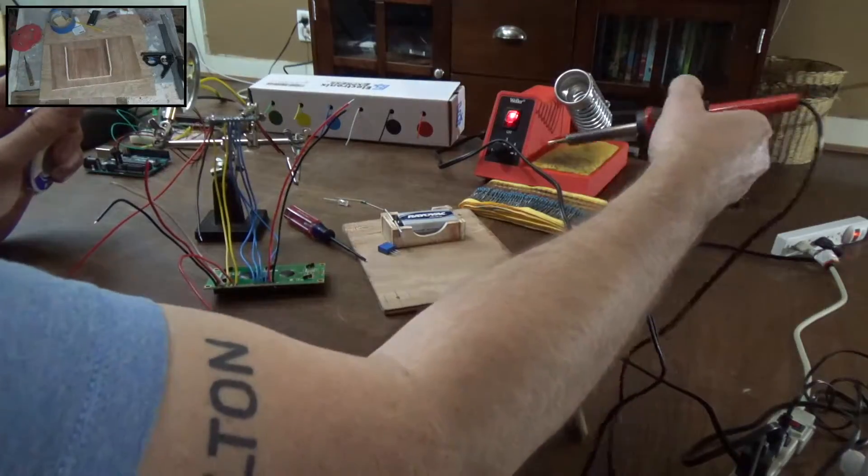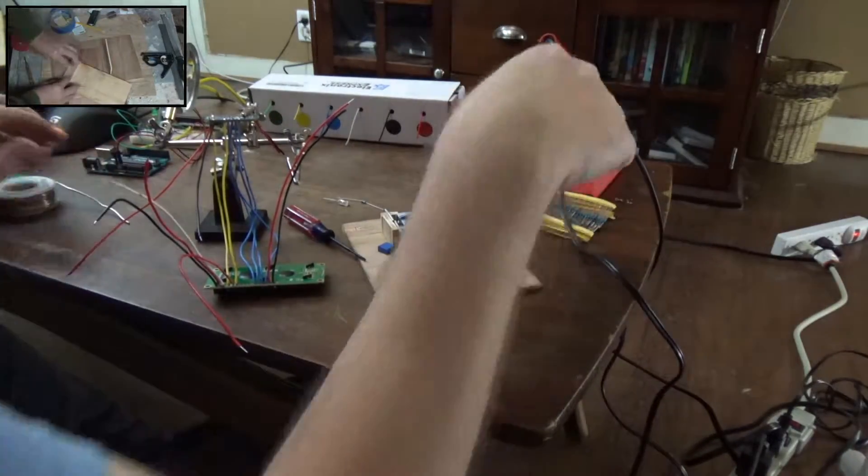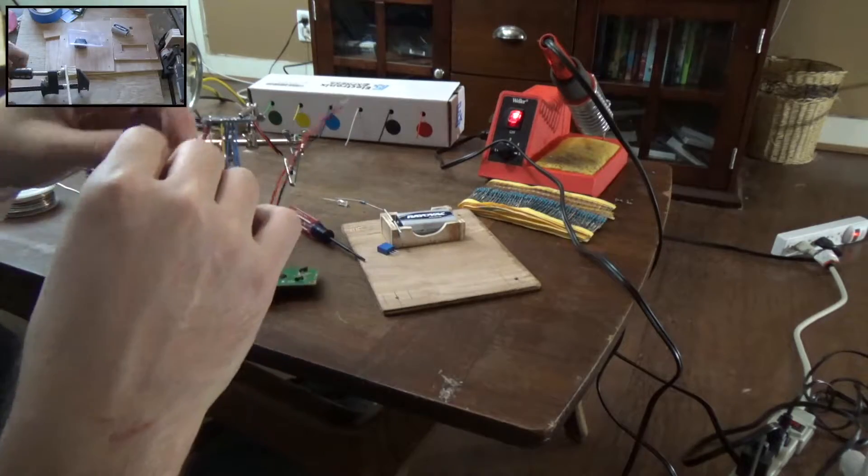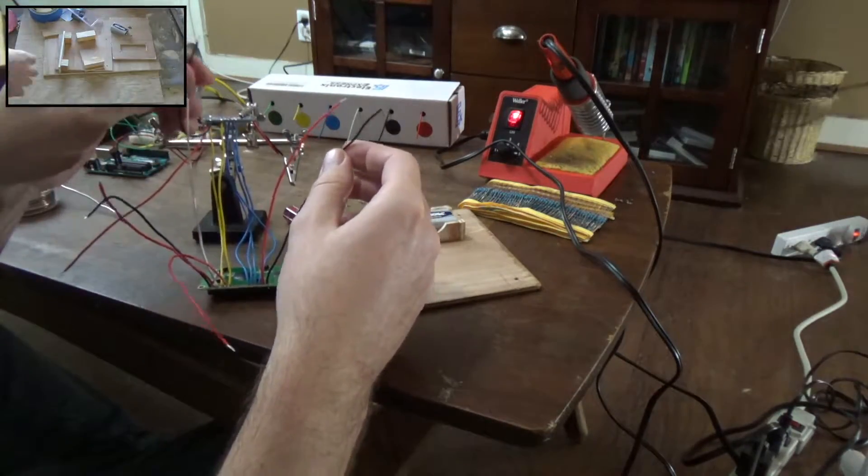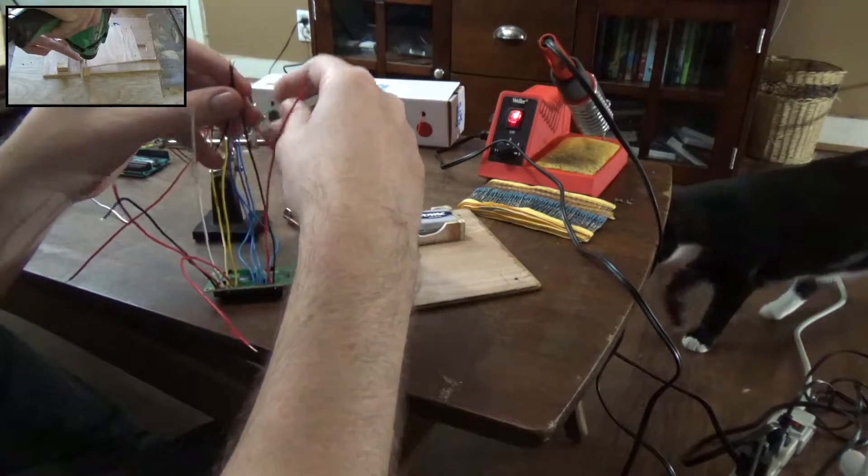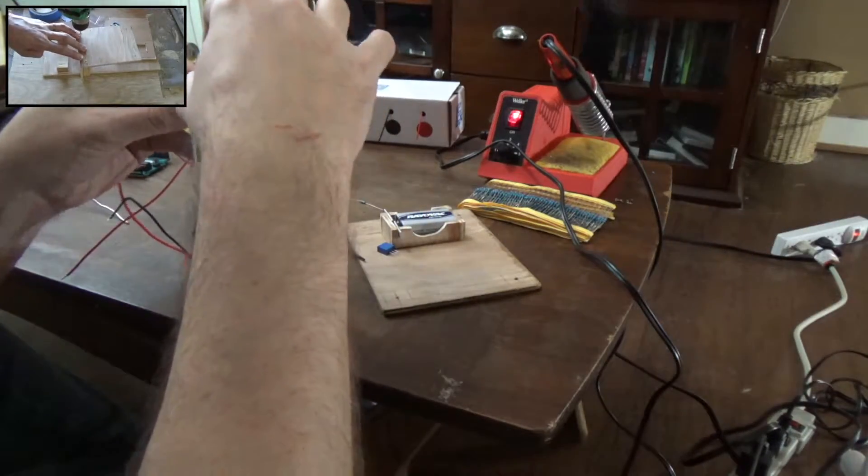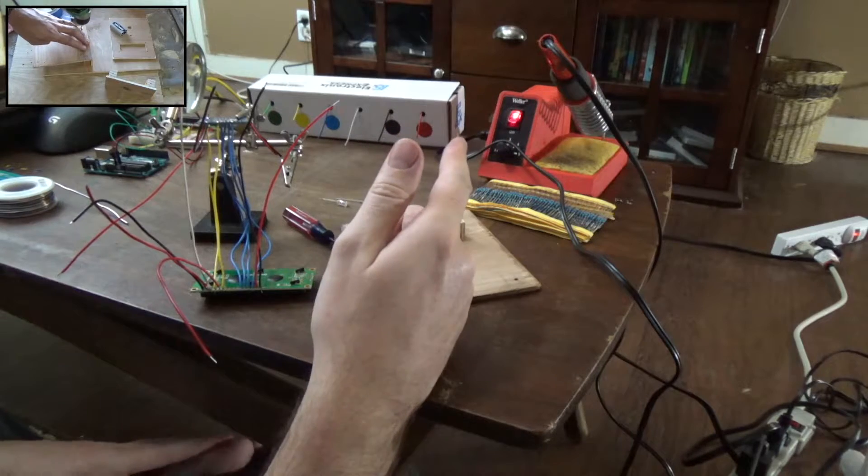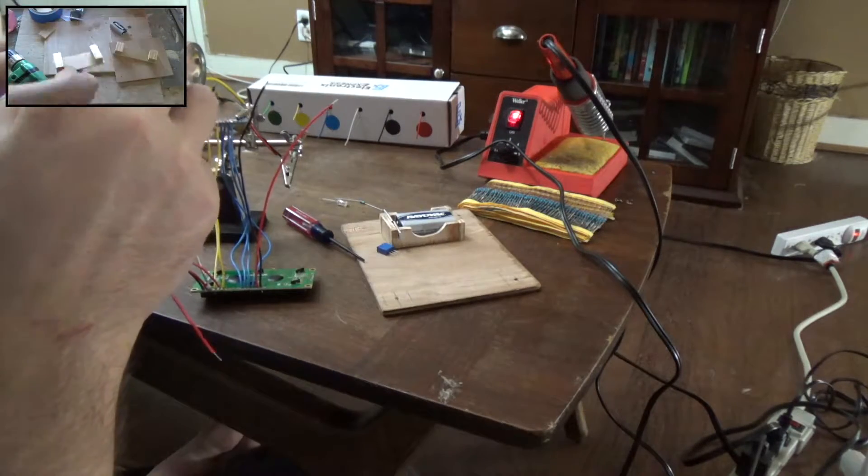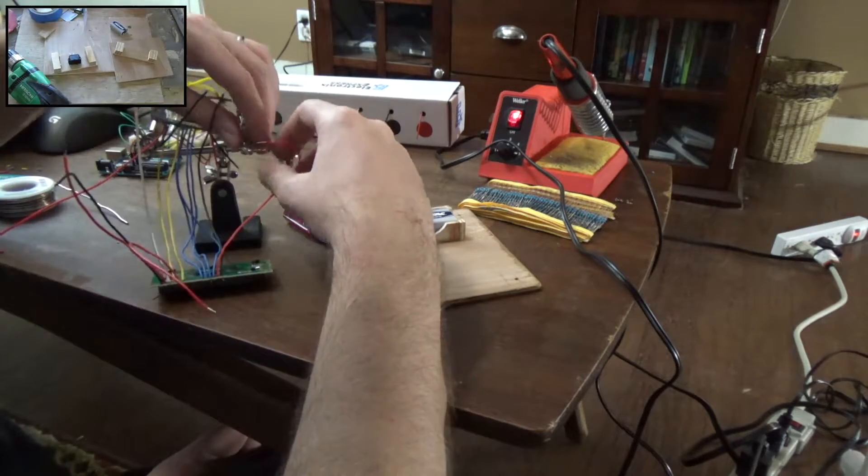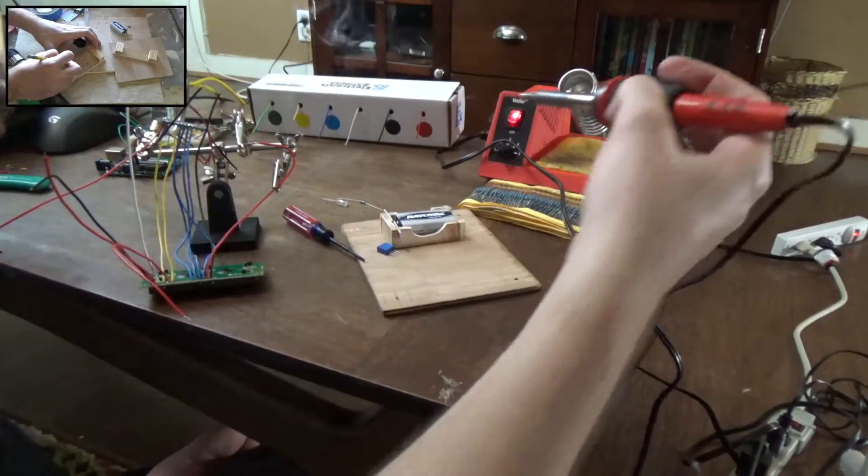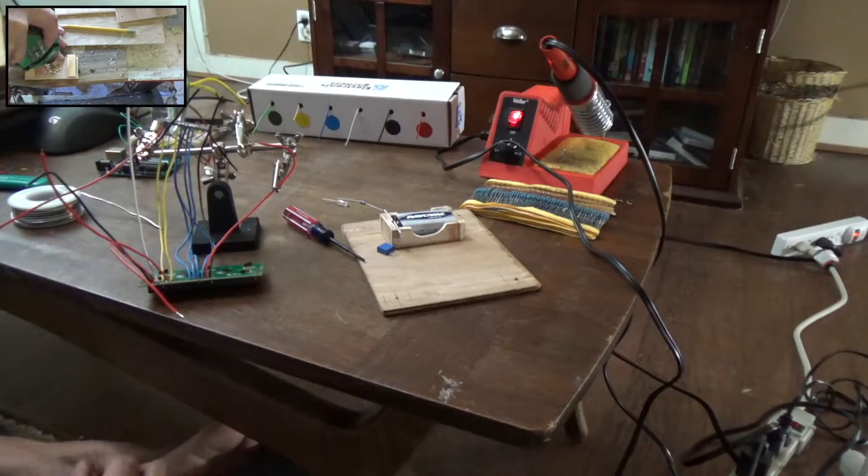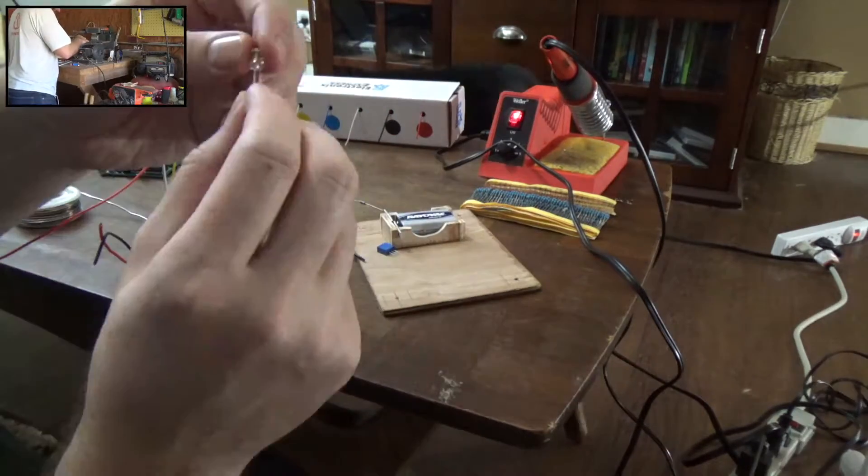This white one goes to the potentiometer and all these black ones go to ground. All the red ones go to positive but we need to use a resistor on one of them. The red LCD pin number 15 gets a 220 ohm resistor.